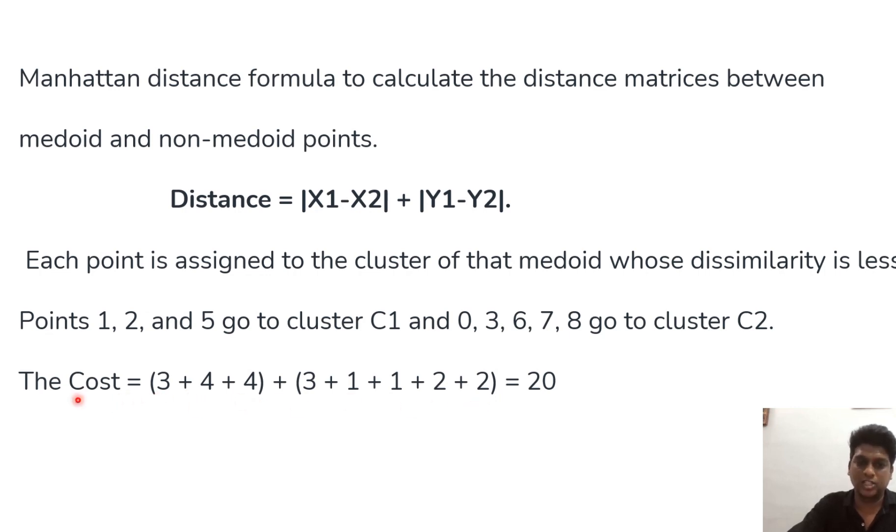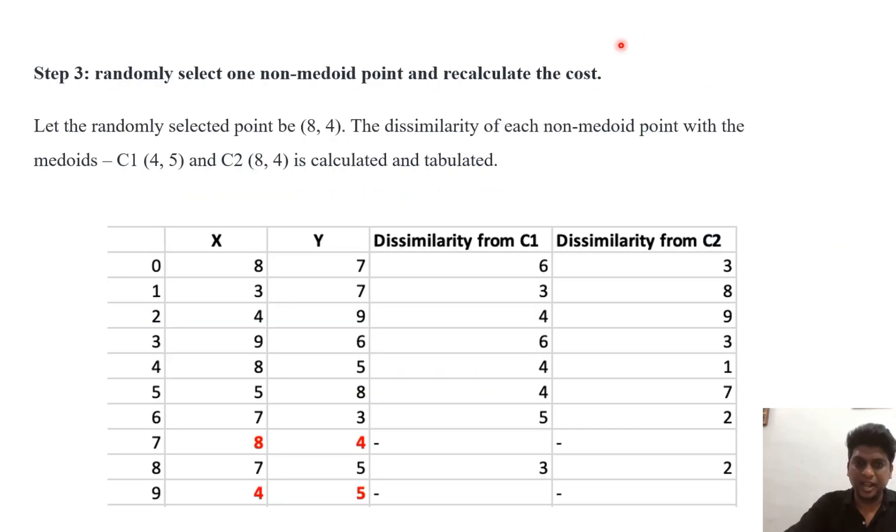In step 3 again we have to select one non-Medoid point and we have to recalculate the cost once again. So C1 is now chosen as 4,5 and C2 as 8,4. Now we have to again calculate this table once. Now this C1 is 4,5 and C2 is 8,4. The same procedure.